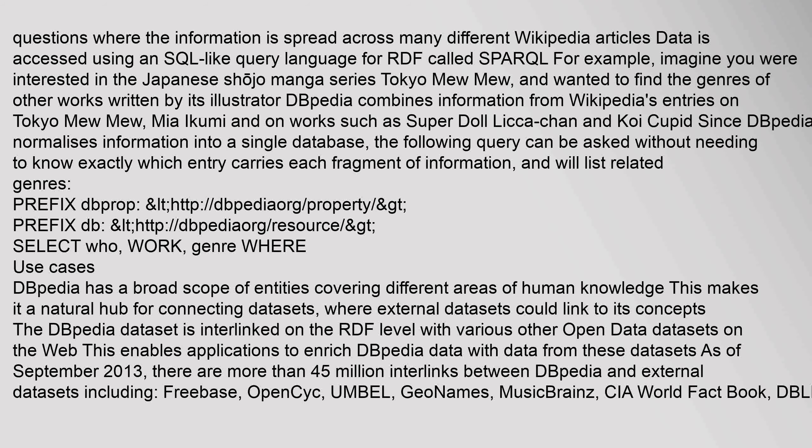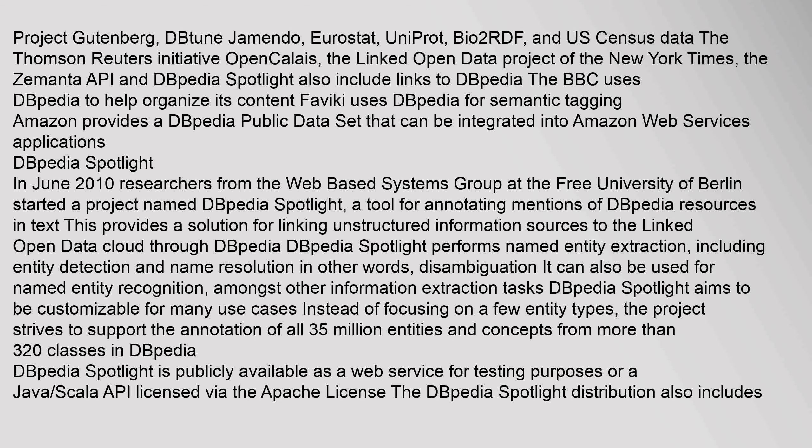Use cases for DBpedia include links from Project Gutenberg, Eurostat, Uniprot, Bio2RDF, and U.S. Census data. The Thomson Reuters initiative OpenCalais, the linked open data project of the New York Times, the Zemanta API, and DBpedia Spotlight also include links to DBpedia. The BBC uses DBpedia to help organize its content. Faviki uses DBpedia for semantic tagging. Amazon provides a DBpedia public dataset that can be integrated into Amazon Web Services applications.